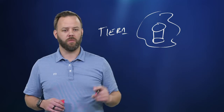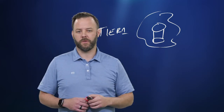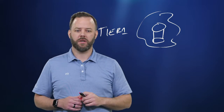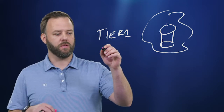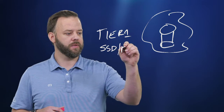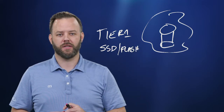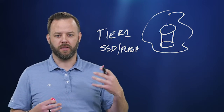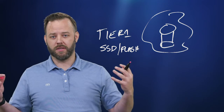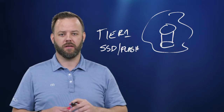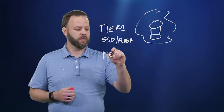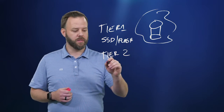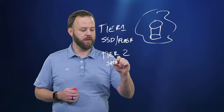At a high level, there are three different tiers of storage. Tier one is the fastest storage available and the highest performing. That's generally where you want to put your production servers, desktops, or whatever you're hosting in the cloud. The physical disks are called SSD, sometimes also called flash, meaning they're not spinning like a record player. When the computer needs data, it goes directly to the sector on the platter and retrieves it very fast.